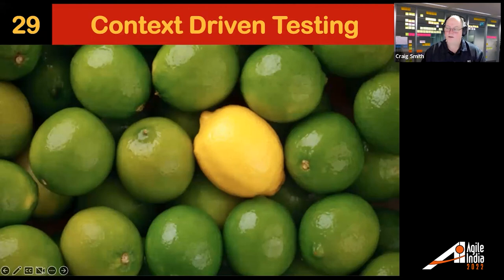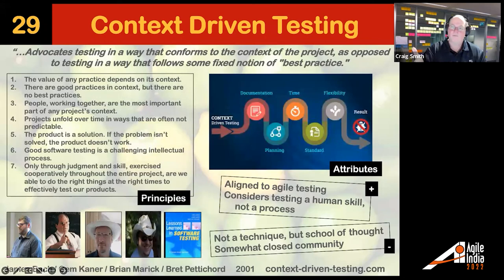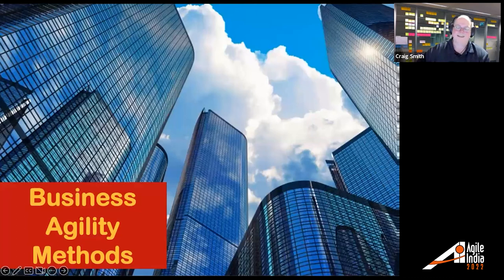What people don't realize is the testing community for many years has been trying to move in an Agile way. Context-Driven Testing has been around since the early 2000s and had a whole pile of principles around agility — really the idea was to bring humans to the forefront. Not really a technique but a school of thought, well worth going to look at. Sometimes we ignore testing, but it's one of the biggest roadblocks we have to agility.